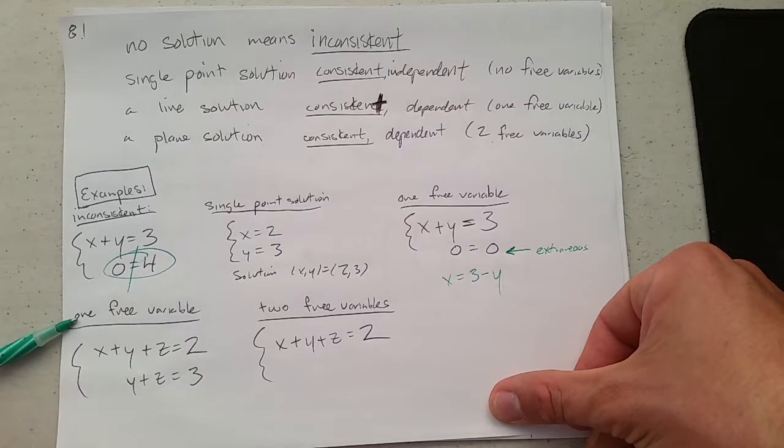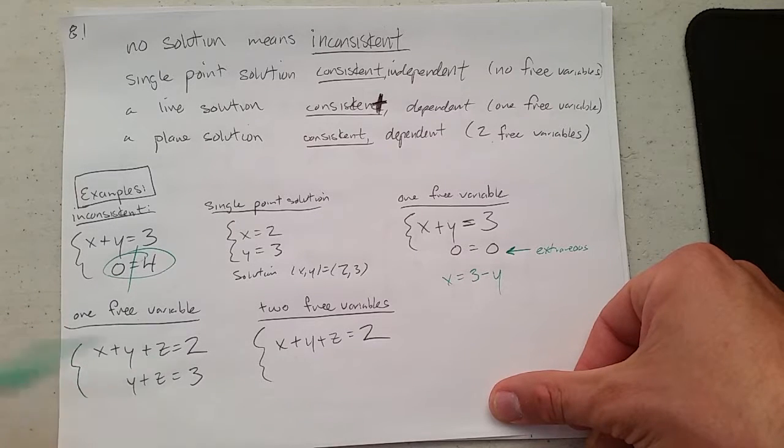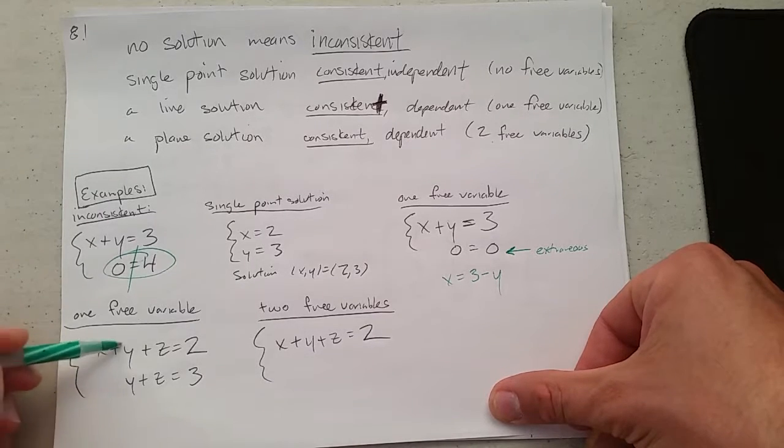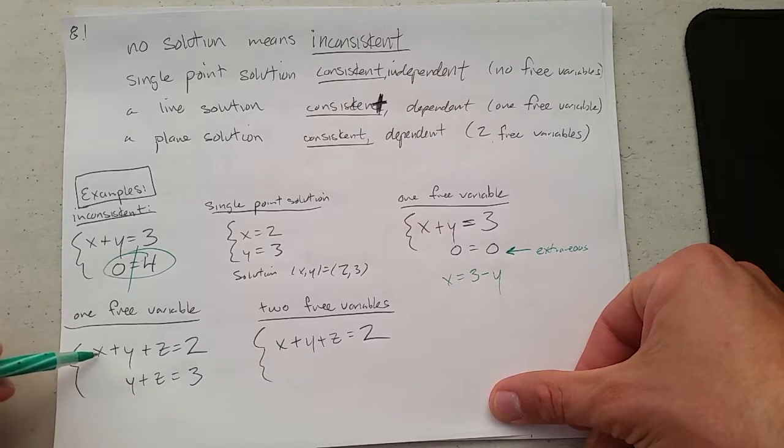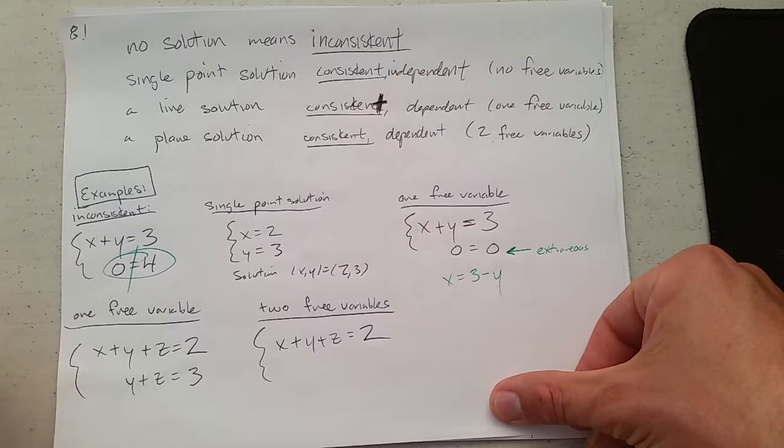So there's another example with one free variable. We have three variables now, X, Y, and Z. One free variable. Why do we have one free variable here? If I use elimination, I can eliminate Y and Z pretty easily, and then you'll see that X has a certain value. If I just subtract here, I would see X has to equal negative one.